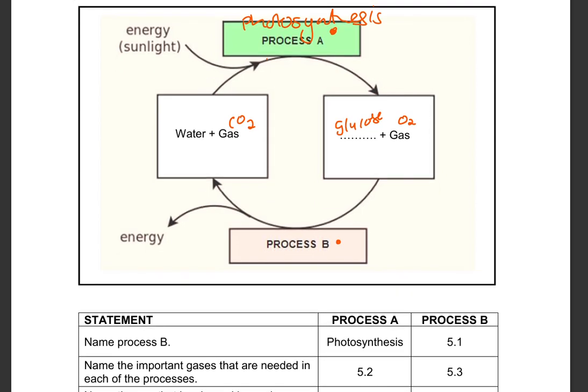Process B will obviously be cellular respiration. And the reason for that is what we are able to see here is that in order for process B to take place, it is going to basically use the product of photosynthesis, which is glucose and oxygen. The process will take place and energy is going to be produced together with carbon dioxide and water.